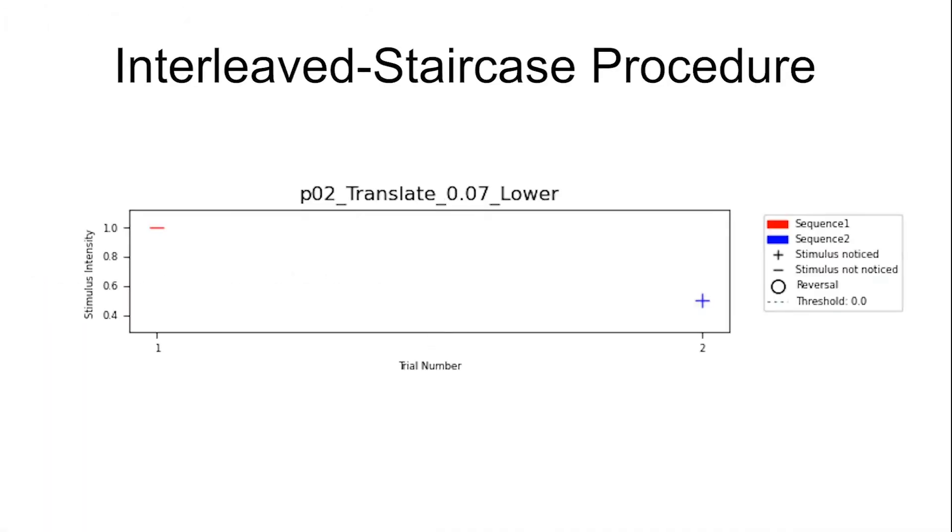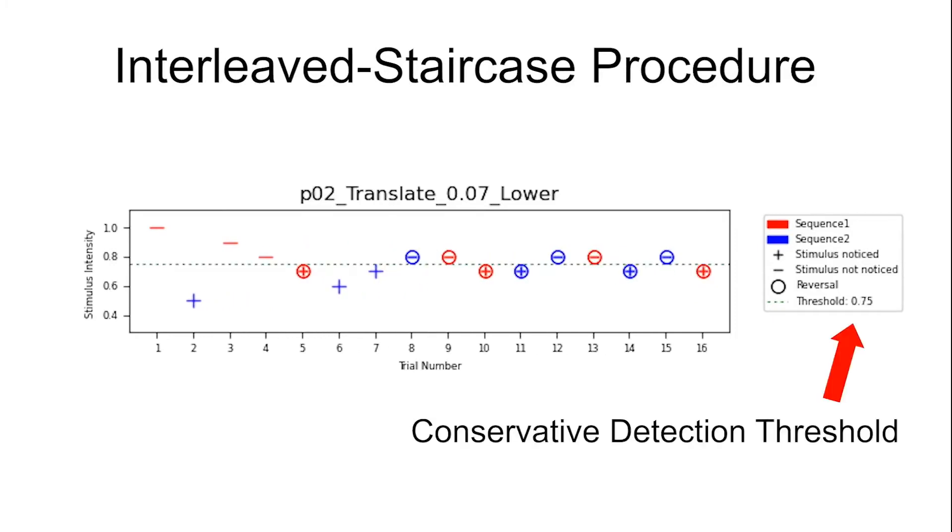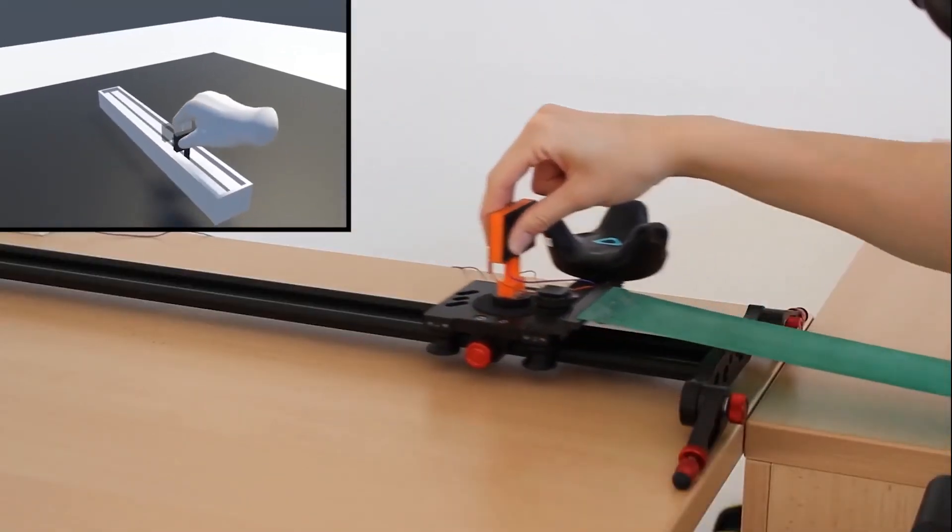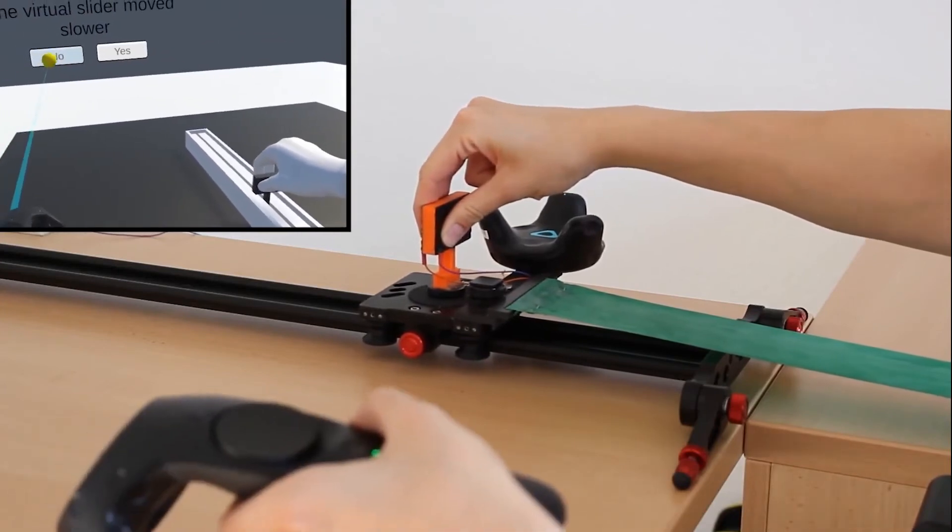We used an adaptive interleaved staircase procedure to determine conservative detection thresholds for the different conditions. Participants were instructed to grasp the slider and translate it to a goal position while being exposed to different manipulation factors.